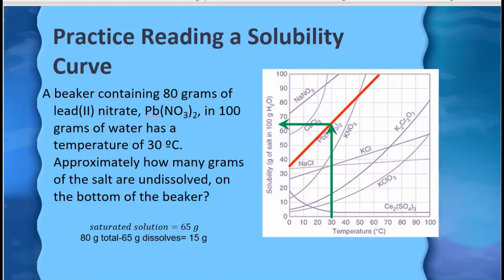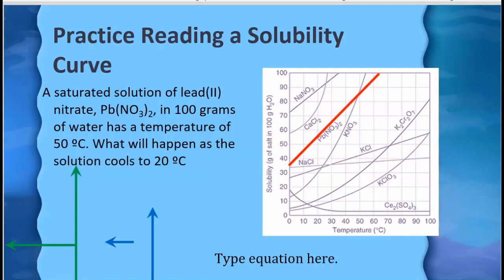Let's try a similar but maybe a two-step problem. I have a saturated solution of lead nitrate, so I can use that red line again, in 100 grams of water. So I know I'm working with the right graph here, and it's at 50°C.